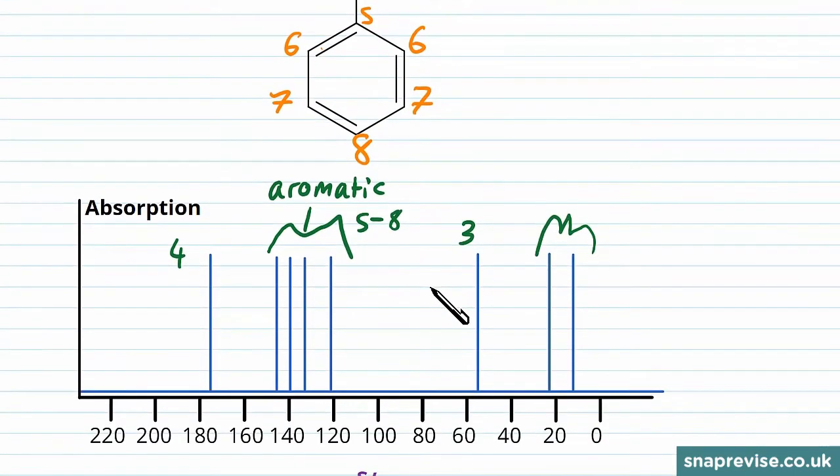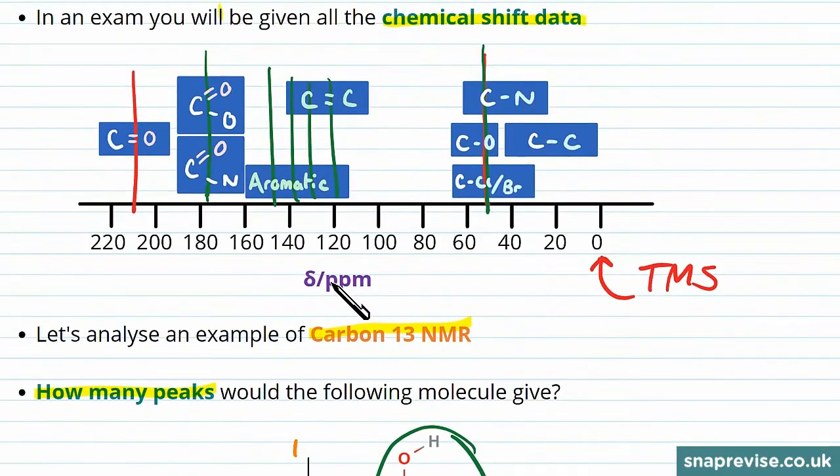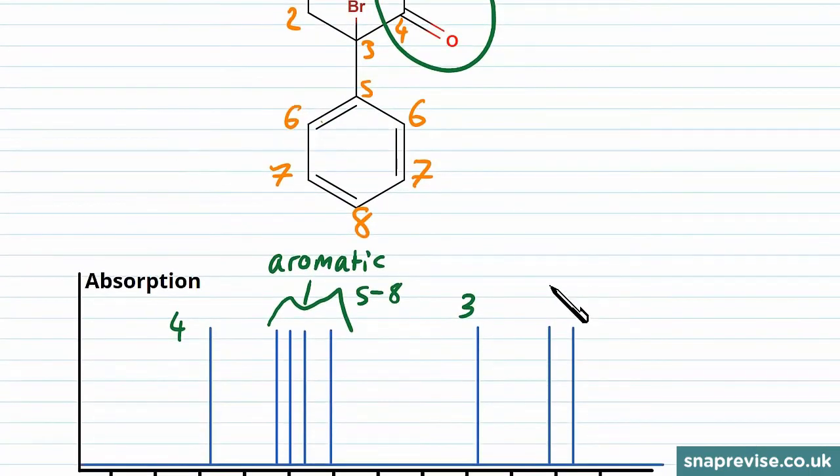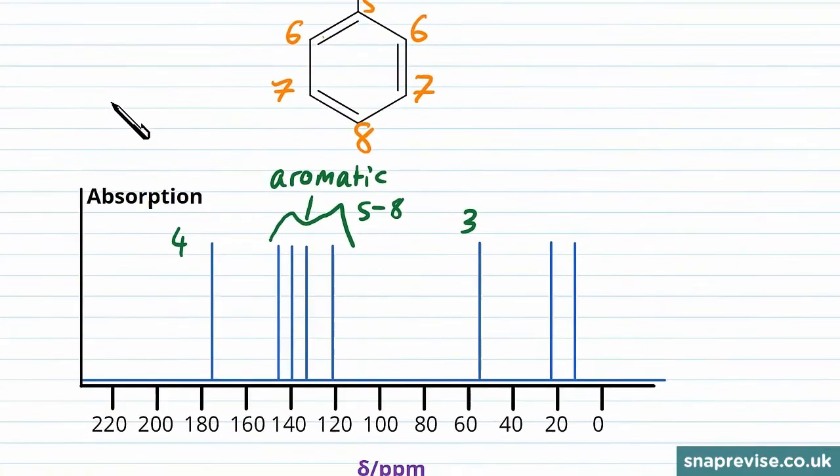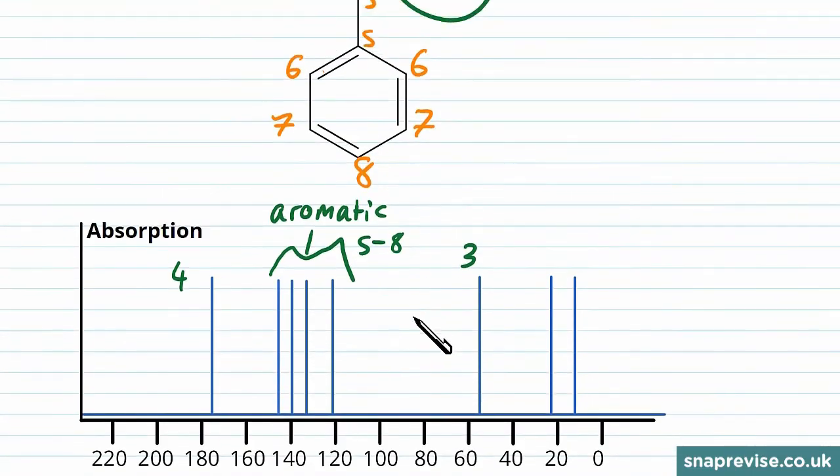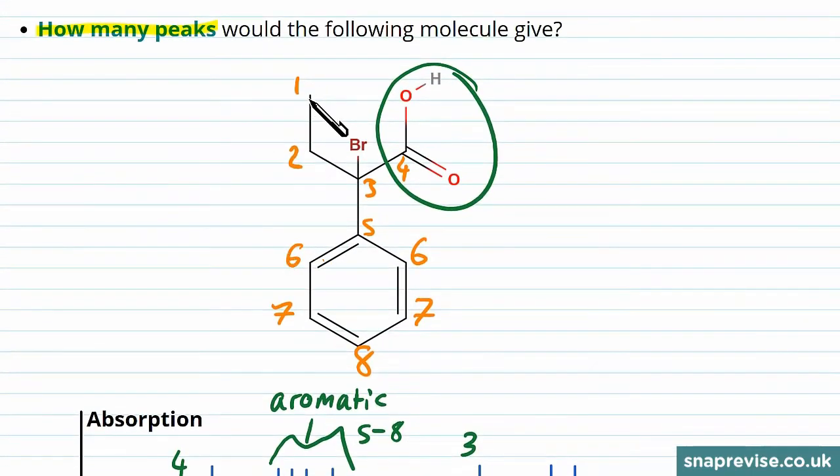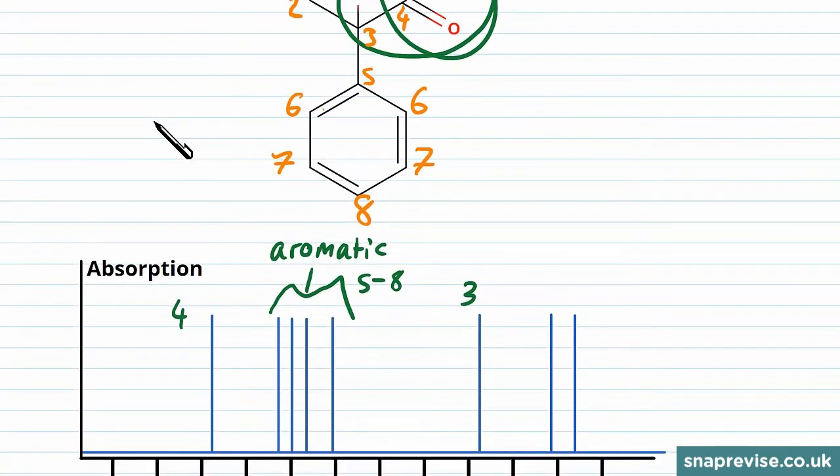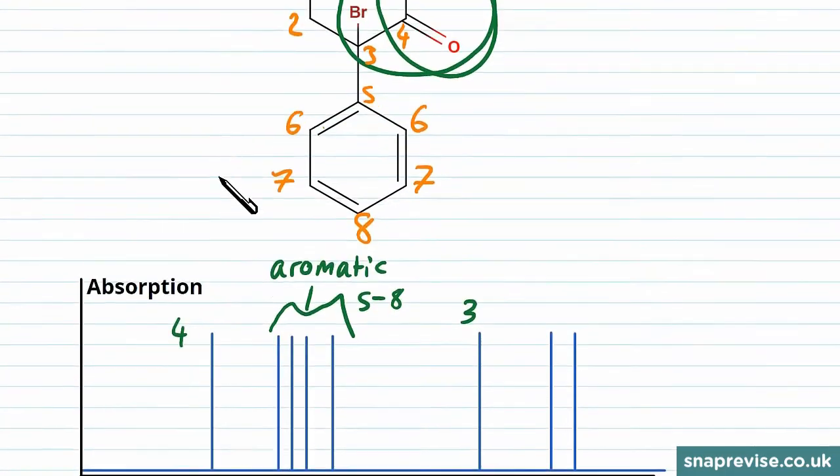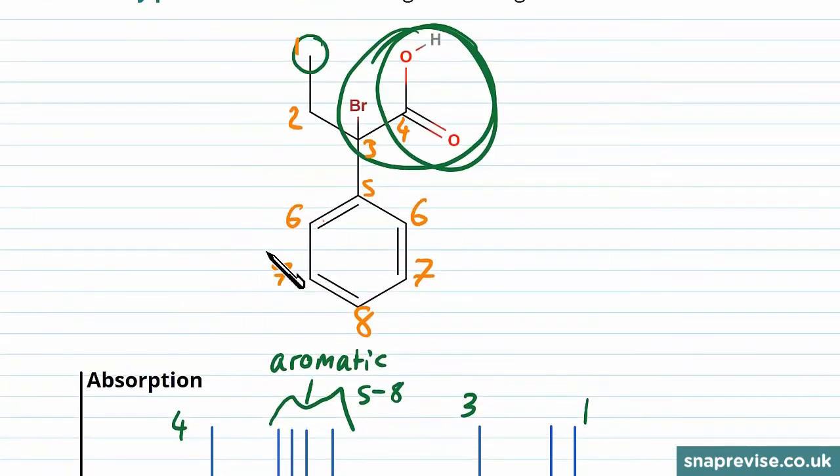We then have two peaks here which are both around about 20, and you can see that that is in the range of being a carbon that is attached to another carbon. With these peaks we can even go slightly better, because as we've talked about, how close a peak is to zero tells you how similar it is to TMS. So looking at our molecule, this carbon over here is furthest away from all of these electronegative elements which are going to move the signal more towards the left hand side.